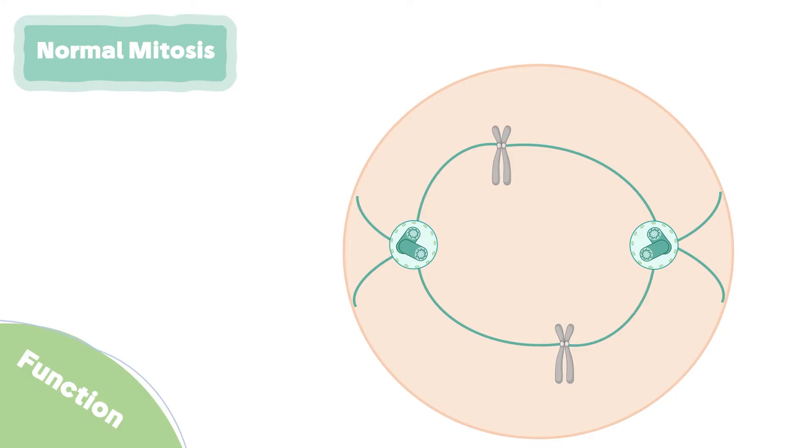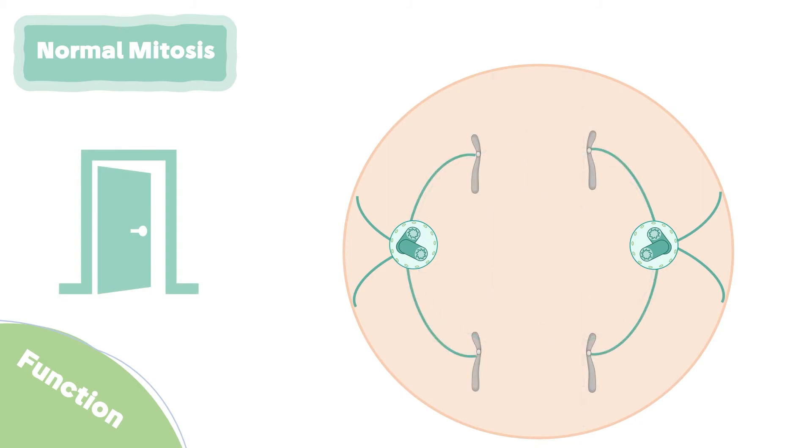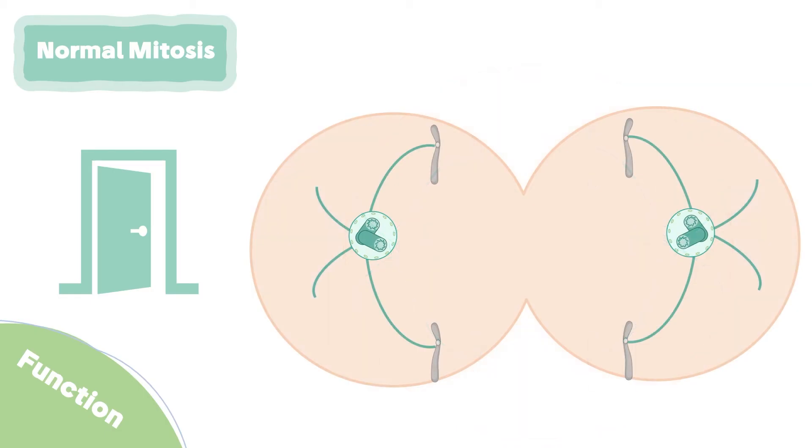When the chromosomes are aligned, the cell allows the separation of chromosomes into two chromatids and the division of one cell into two daughter cells.